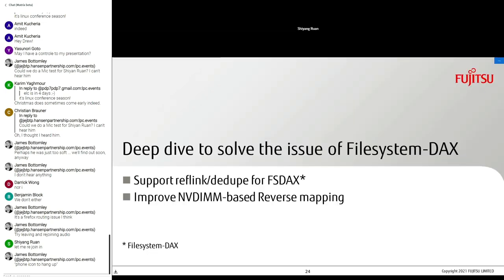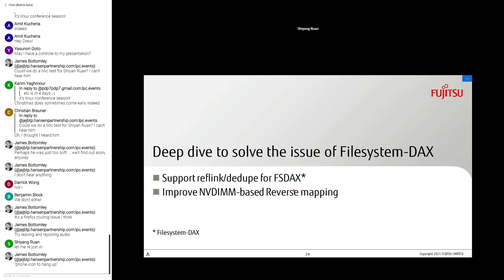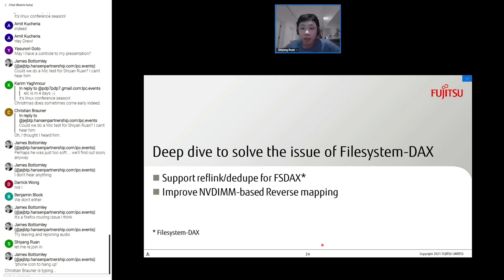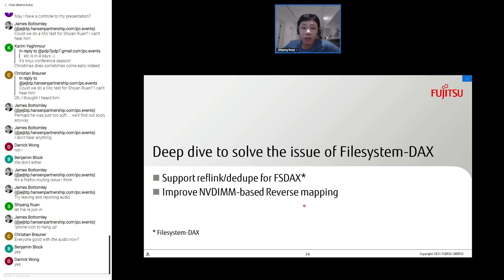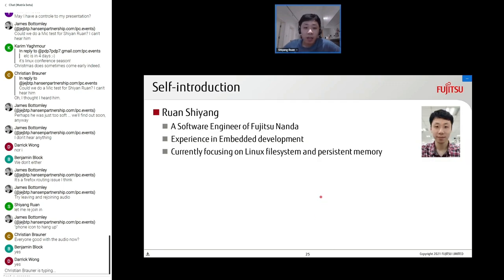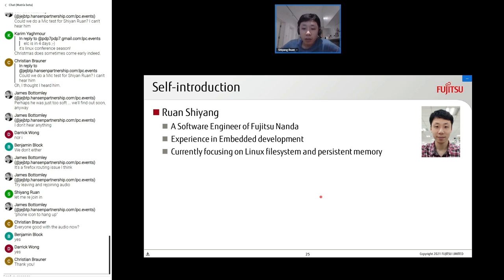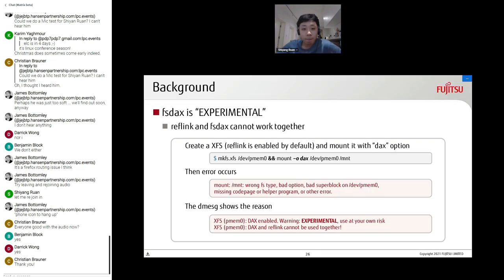My name is Ranxiang. I'm a software engineer at Fujitsu Nanda. I used to work in embedded development and currently focus on Linux file system persistent memory. I'm going to show how we deep dive to solve the issues of file system DAX in two parts: first, how to support reflink/dedupe for FS DAX, and second, how to improve the NVDIMM-based reverse mapping.